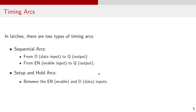Now let's examine the timing arcs supported in a latch. Timing arcs represent the delay between specific pins, such as from an input to output or between two input pins. In latches, there are two types of timing arcs: sequential arcs and setup and hold arcs. Sequential arcs are from data input D to output Q and enable input EN to output Q. Setup and hold arcs are between enable EN and data input D.